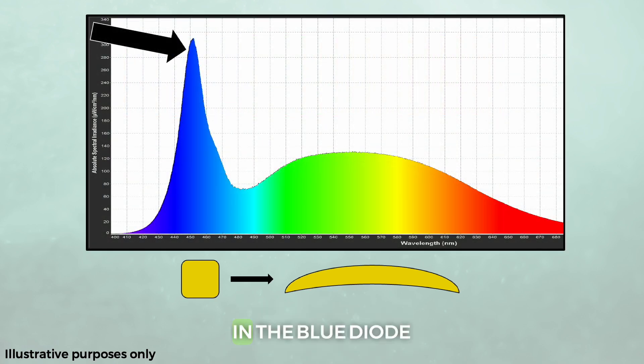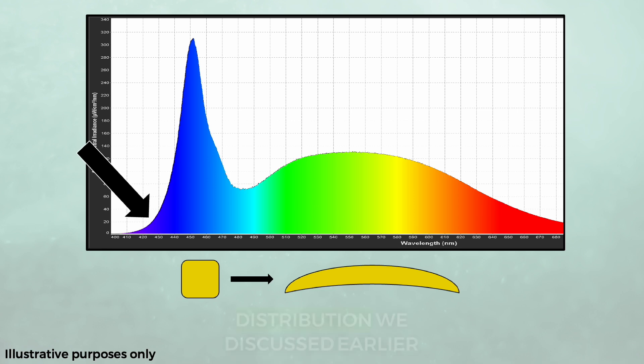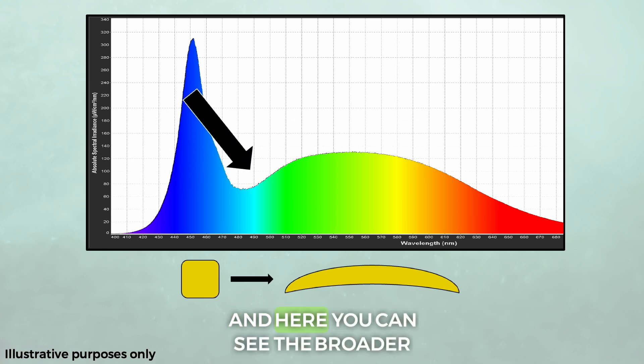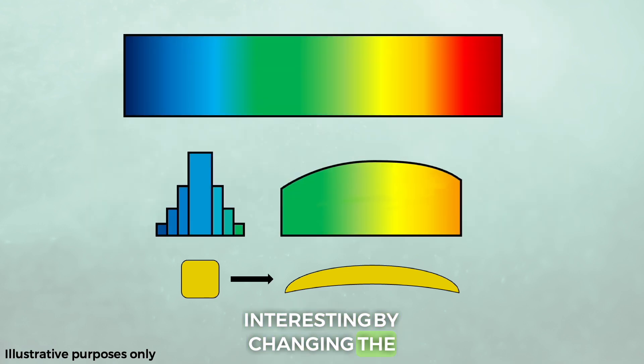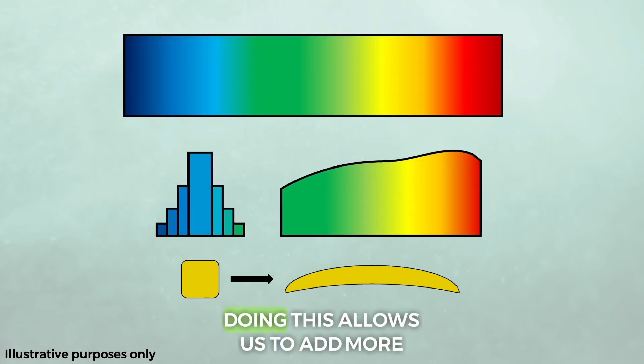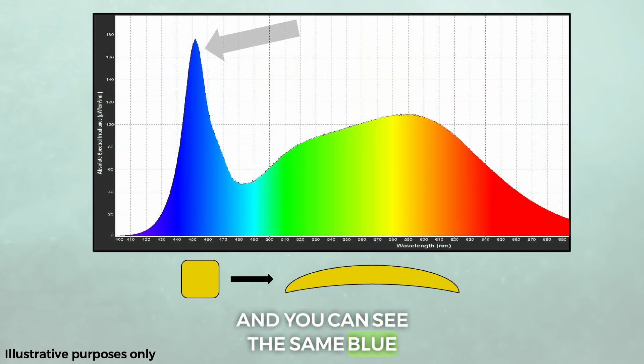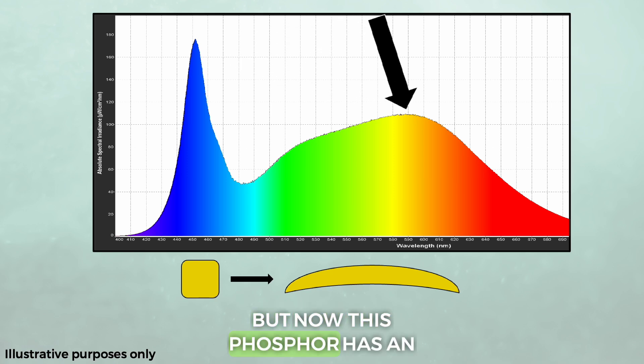You can see the peak wavelength from the blue diode, you can see the Lorentzian distribution we discussed earlier, and here you can see the broader colors being emitted by the phosphor coating. And we can do something quite interesting by changing the chemicals that make up this phosphor. Doing this allows us to add more colors to the total output. Here's another example, and you can see the same blue peak from the blue diode, but now this phosphor has an output with more red.